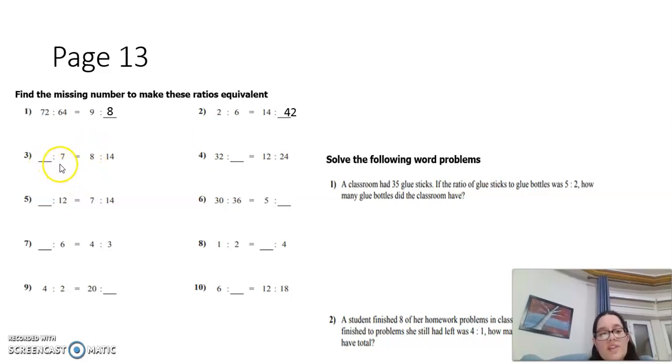Now, something to 7 equals 8 to 14. 7 becomes 14 by timing it by 2. So what is the number that I'm going to time by 2 to get 8? It's 4.